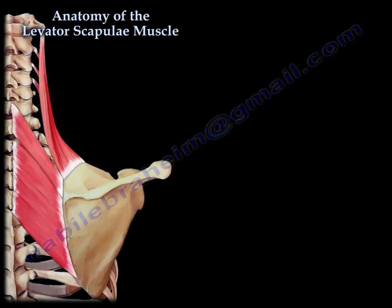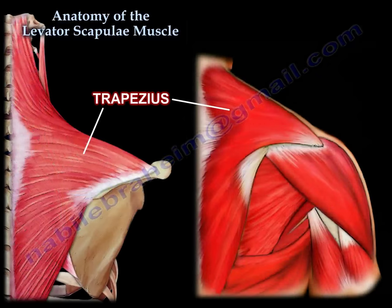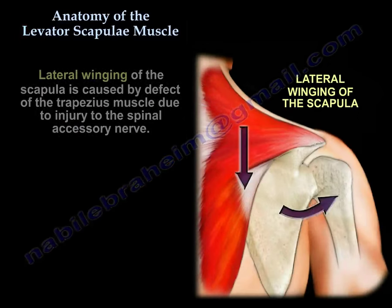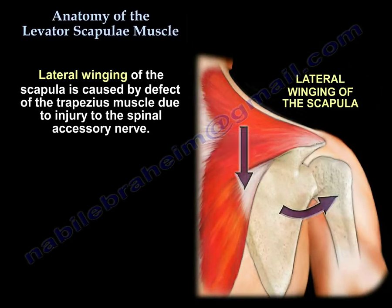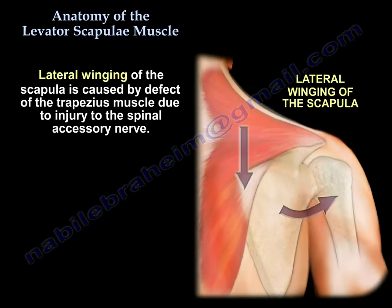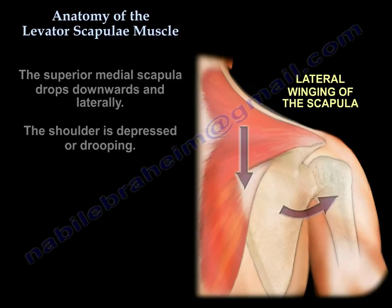Lateral winging of the scapula is caused by a defect in the trapezius due to injury of the spinal accessory nerve, usually from lymph node biopsy in the posterior part of the neck. The superior medial scapula drops downwards and laterally, and the shoulder is depressed or drooping.